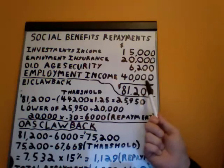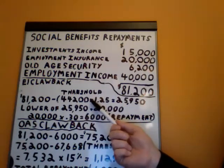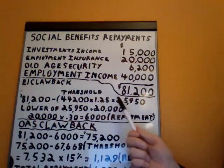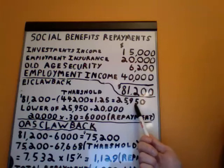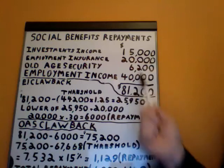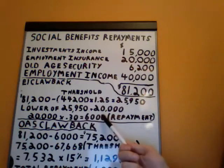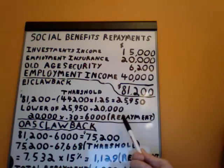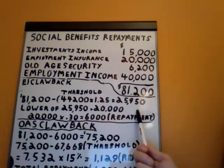What we do is take $81,200 less the threshold of $55,250, which works out to $25,950. Then we compare that to the $20,000 employment insurance received. Whichever number is lower — $20,000 — we must repay 30% of. So 30% of $20,000 is $6,000. That is the social benefit repayment on behalf of the employment insurance. So let's put that aside for now.